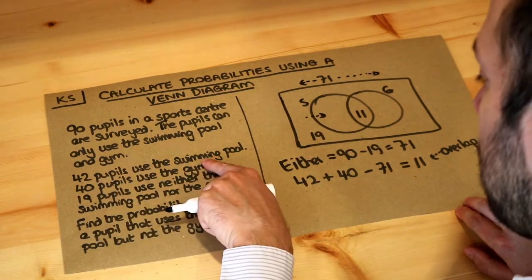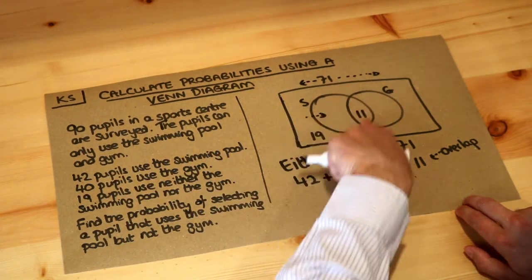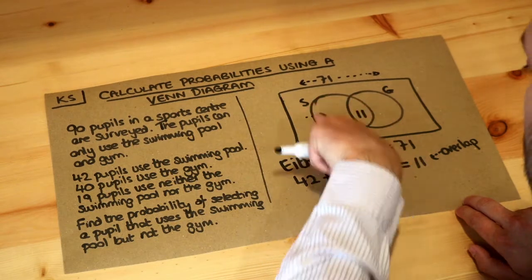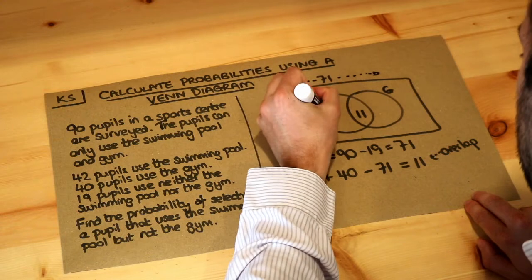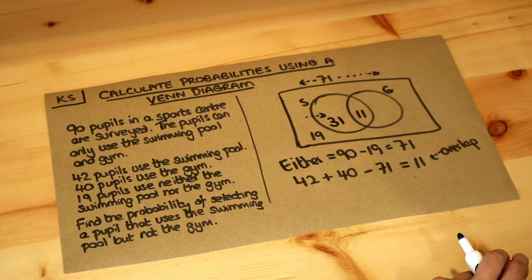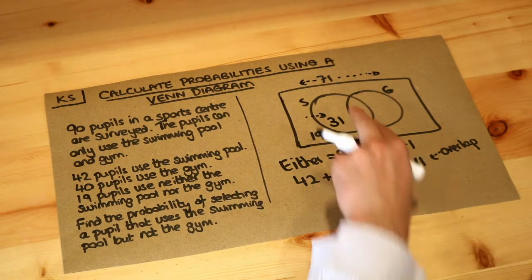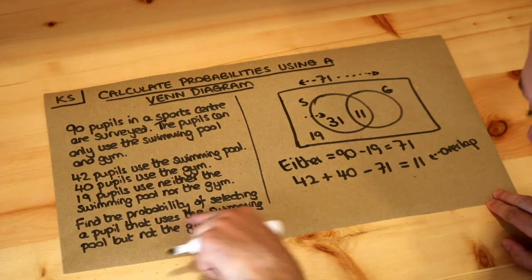Now in total there's 42 people who use the swimming pool, so the total of the numbers in the swimming circle is 42. If we do 42 minus 11 people here that gives you 31. So that's 31 people who use the swimming pool but not the gym. That's what we're interested in here.